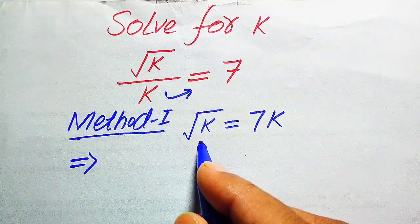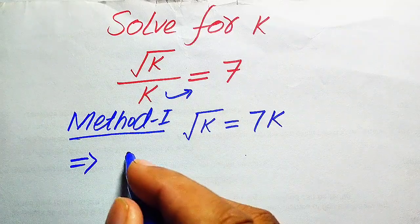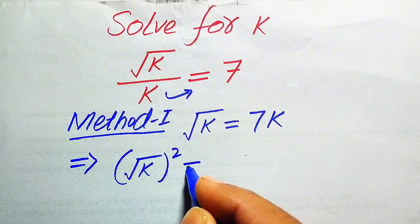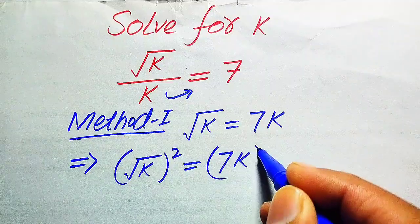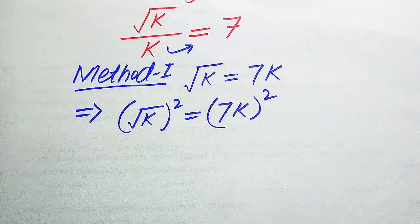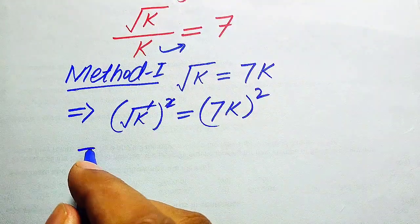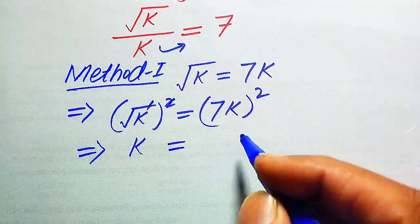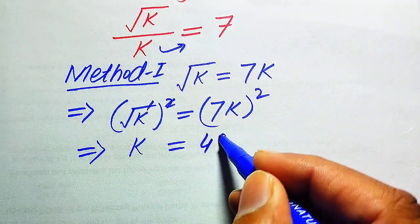In the next step, we need to remove the square root sign from the left-hand side. To do this, we take squaring on both sides. When we take squaring, we write square root of k, whole squared, equals 7k, whole squared. The square and square root cancel each other out.